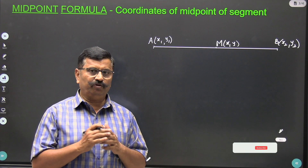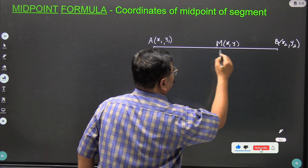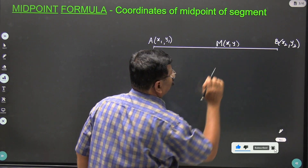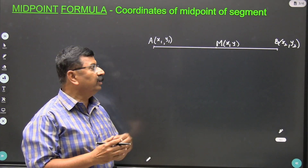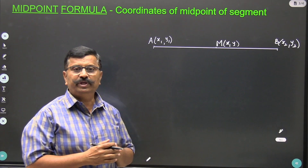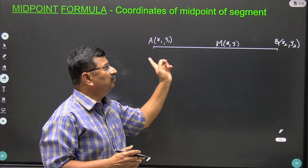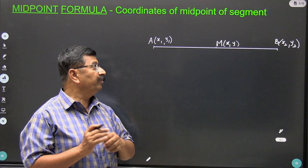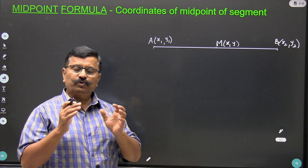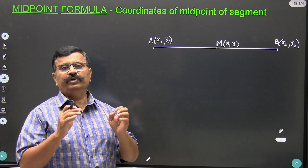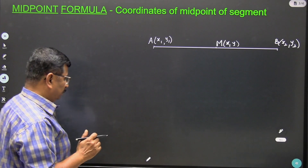Now what do you mean by midpoint formula? There is a segment AB and M is the midpoint of this segment AB. Coordinates of point A are x1, y1 while the coordinates of point B are x2, y2, and M is the midpoint of segment AB and we want to find out the coordinates of M. To find the coordinates of M we need to know the section formula, so let us revise the section formula.